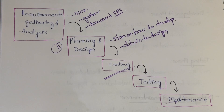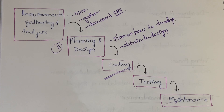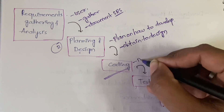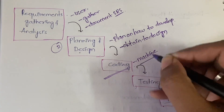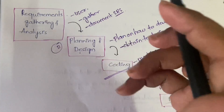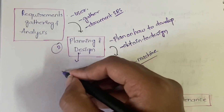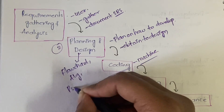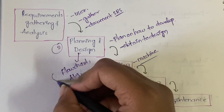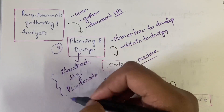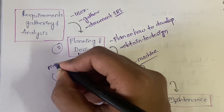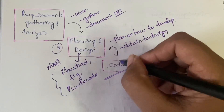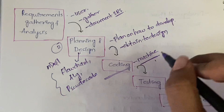Next comes coding. In coding, you write the code — code in the language which a machine can understand. You convert whatever design you have drawn — whether it is a flowchart, algorithm, or pseudo code — into machine-understandable format. We can understand flowcharts and algorithms, but the machine cannot, so you write code in a language understandable by the machine.